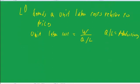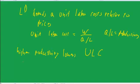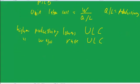So higher productivity lowers, and I'll just abbreviate unit labor cost that way. Higher wages raise unit labor cost. And if prices minus unit labor cost go up, then labor demand and output go up.